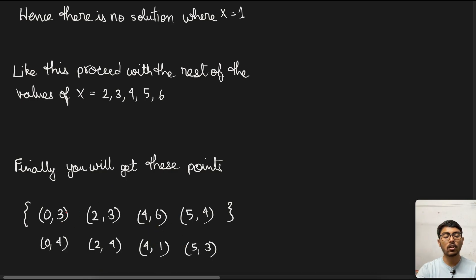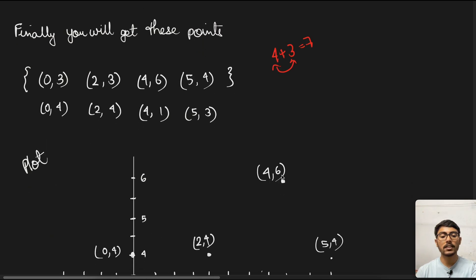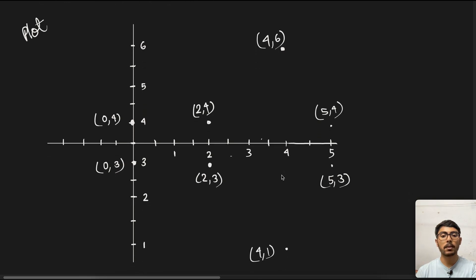You see there is an additive inverse of the group: (0,3) and (0,4), again 3 and 4, 6 and 1, and 4 and 3, because all of these pairs add up to 7, which gives us a sense of additive inverse of each other. We plot these points. I have made a simple plot: (4,6) up top, (5,4), (5,3), (4,1), (2,3), (2,4), (0,3), and (0,4).